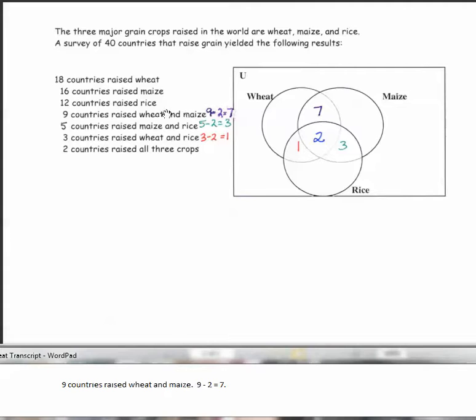Nine countries raised wheat and maize. So 9 minus 2 equals 7.